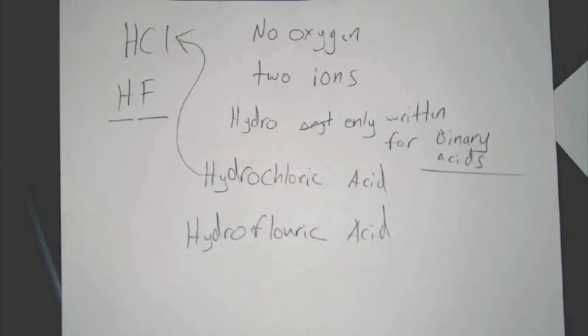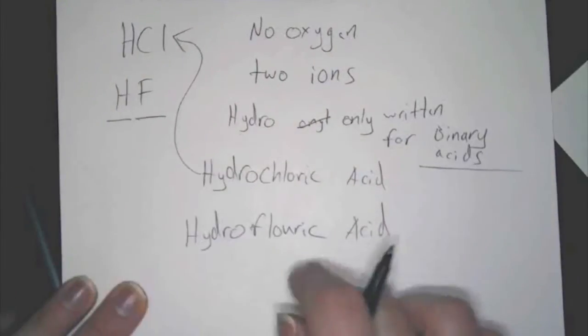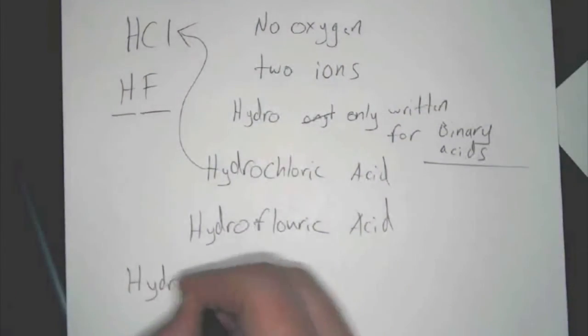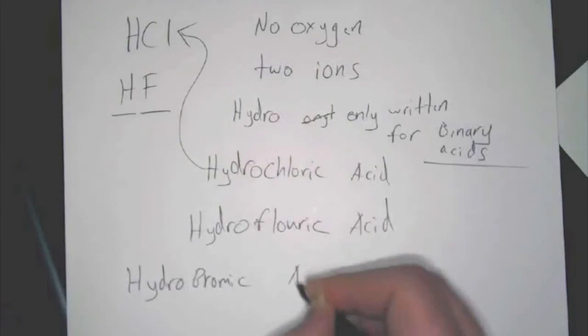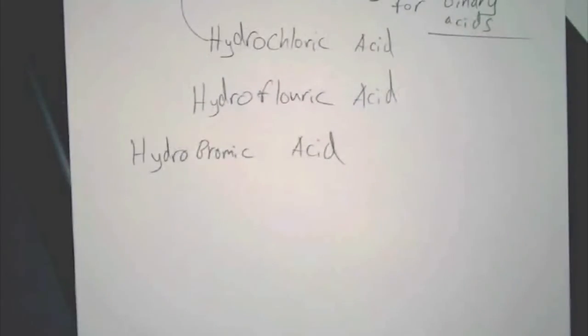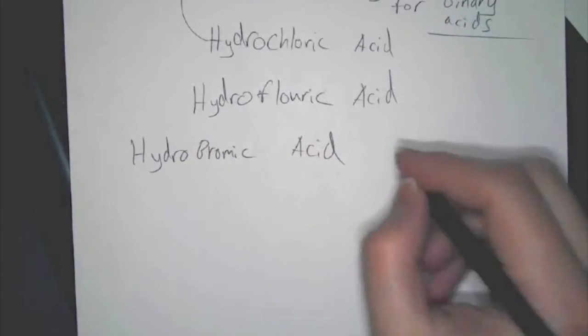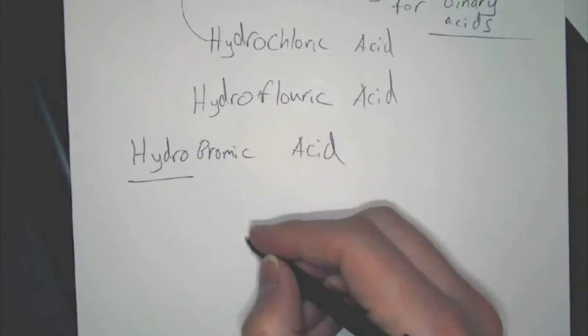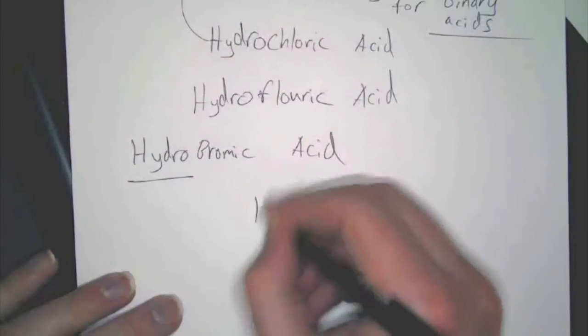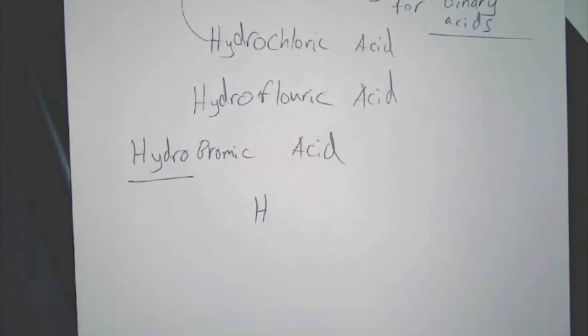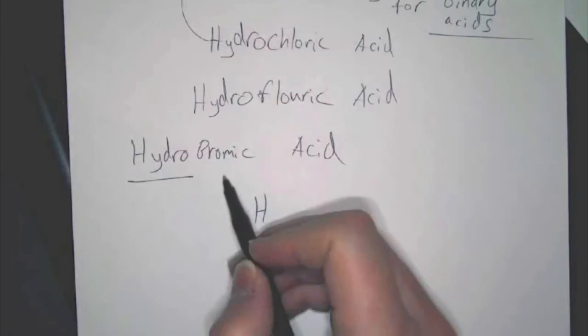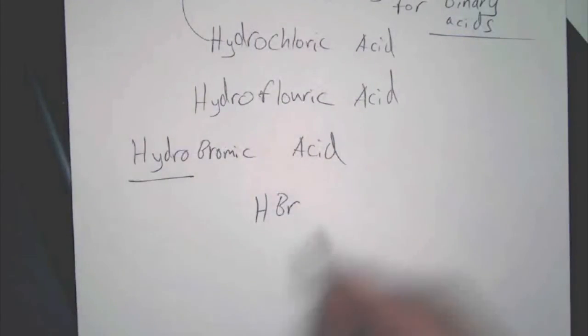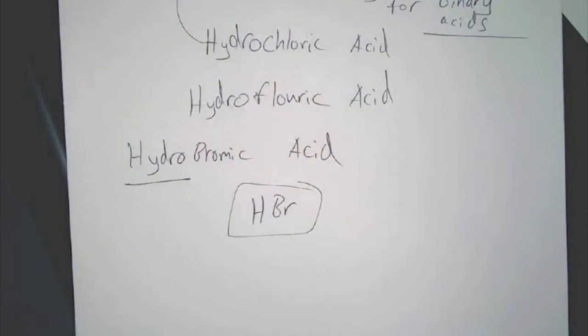Now, the only other thing you're going to have to do is be able to go backwards. So, instead of writing formula to name, you're going to have to see something like this, like hydrobromic acid. You'll be responsible for translating that into a chemical formula. First thing you see, you see hydro. That means it's binary. That means there's no oxygen. You see acid. That also means just write an H automatically. What is our second element going to be? It's bromic, so it's going to be bromine. And that's it.